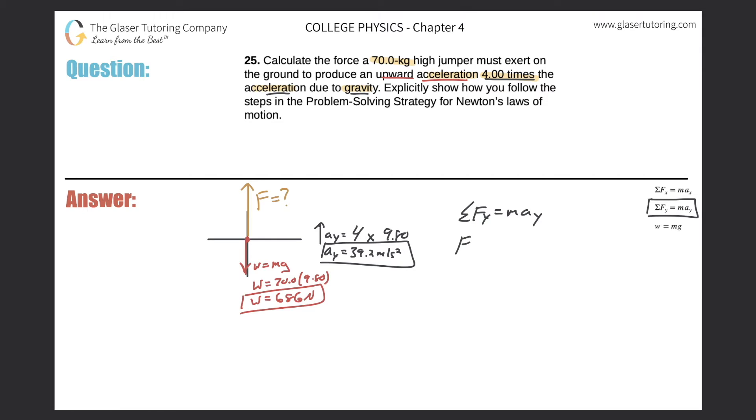So what are the forces in the y direction? We got this force pointing up and the weight pointing down. And that shall equal the mass of the object, which was 70 kilograms multiplied by the acceleration, which is 39.2. And I do know the weight. I had calculated that before. So let me just actually simply plug that in here. So that's just going to be minus 686. So how do I solve it? Simply just take this 686 and add it to the product of those two numbers. So the force is going to be 70 times 39.2 plus 686.